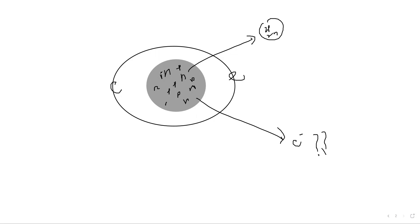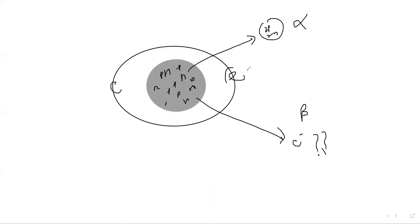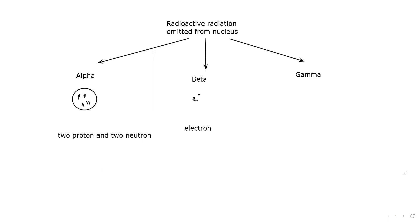How is this electron emitted even though it is not present in the nucleus? The beta electron is not from the outer shell — it is always emitted from the nucleus. It's not like the electrons outside the nucleus; this electron is specifically emitted out from the nucleus.